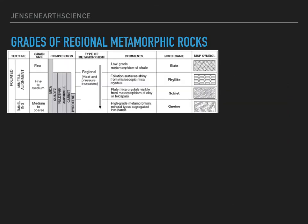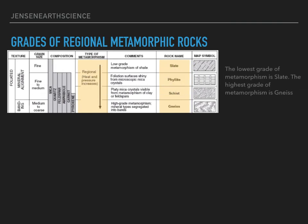So, grades of regional metamorphic rocks. This is the Earth Science Reference Table, and on the Earth Science Reference Table you can see the grades of metamorphism. The lowest grade of metamorphism is slate. The highest grade of metamorphism is gneiss. That means that slate has gone through the least amount of heat and pressure, and gneiss has gone through the most amount of heat and pressure. This line will represent increasing heat and pressure.